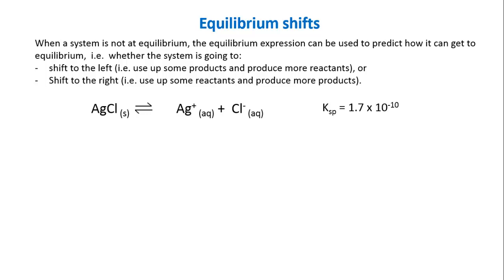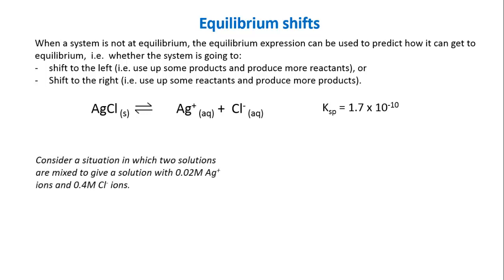We're going to use the dissolution of sodium chloride as our first example. We've got sodium chloride solid dissolving into silver ions and chloride ions. The Ksp for silver chloride is 1.7 times 10 to the minus 10, so you can tell from that number that silver chloride is not particularly soluble. Let's consider a situation where we mix two solutions and get a solution that has 0.02 molar silver ions and 0.4 molar chloride ions. The question is: what is this system going to do? Is it at equilibrium, and if not, what can it do to get to equilibrium?